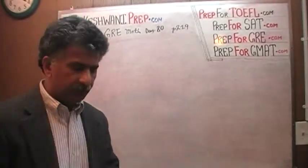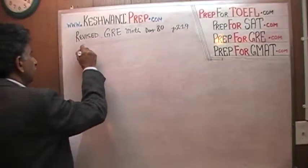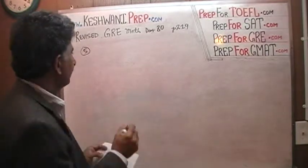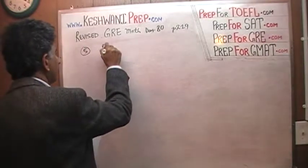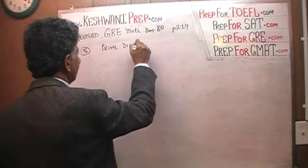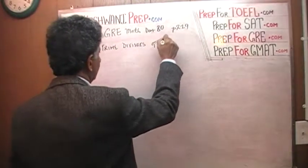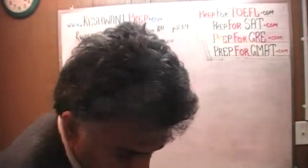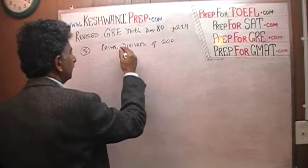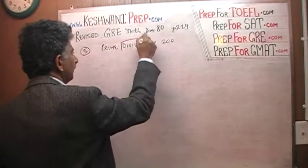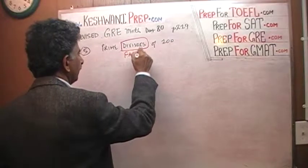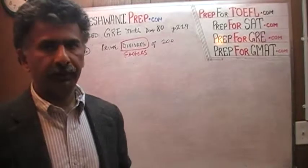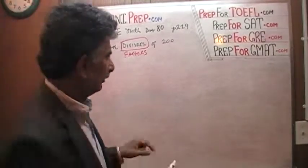Problem number 5 is what we are about to do. They are asking us: what are the prime divisors of 100? Prime divisors of 100. What does it mean — divisors? Let's take care of that first. A divisor is just a fancy way of saying factors. So here they are looking for not all the factors of 100, but just the prime factors. And this is how we do it.